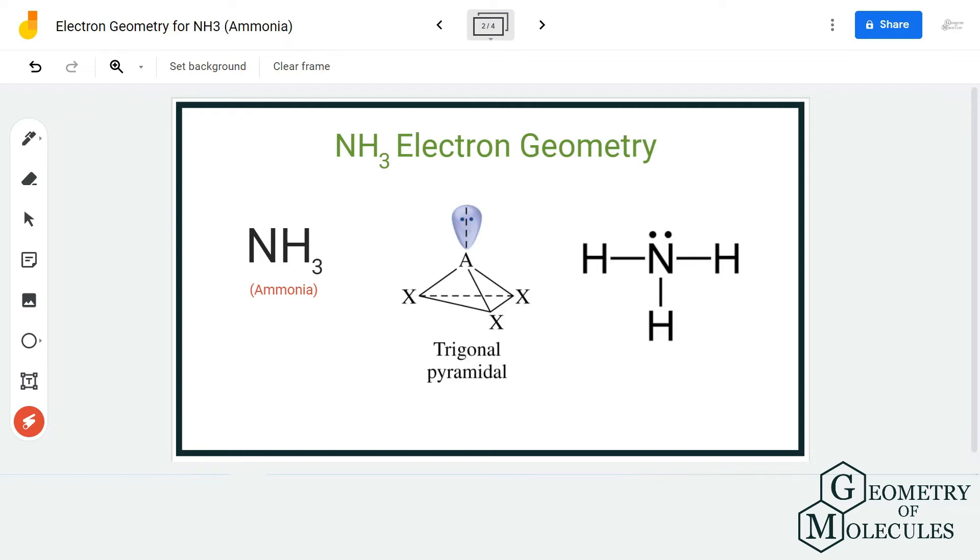When the nitrogen atom is in the center, it forms bonds with three hydrogen atoms. There is one lone pair of electrons on the nitrogen atom, and due to this, the geometry of the molecule, the molecular geometry of the molecule, is trigonal pyramidal.